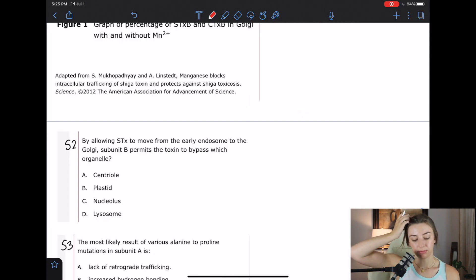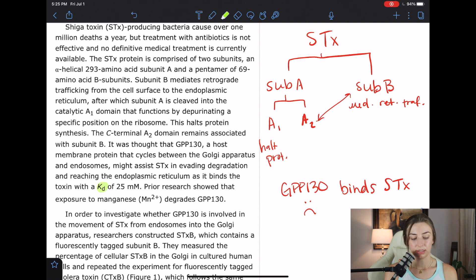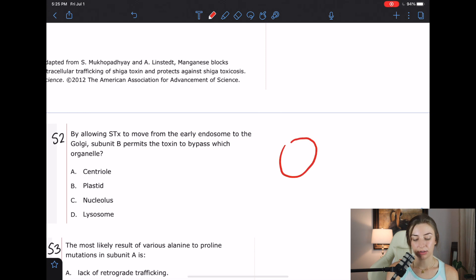Question 52. By allowing Shiga toxin to move from the early endosome to the Golgi, subunit B permits the toxin to bypass which organelle? So I'm going back up here to the passage to where it first mentioned subunit B, and it says that it mediates retrograde trafficking from the cell surface to the ER. So basically if we have a cell and we have an endosome that is kind of got this Shiga toxin within it, it's basically saying if that endosome is able to get to the Golgi, what is happening? It's got to bypass something. It's got to get past something in order to be able to really cause this effect on cells.